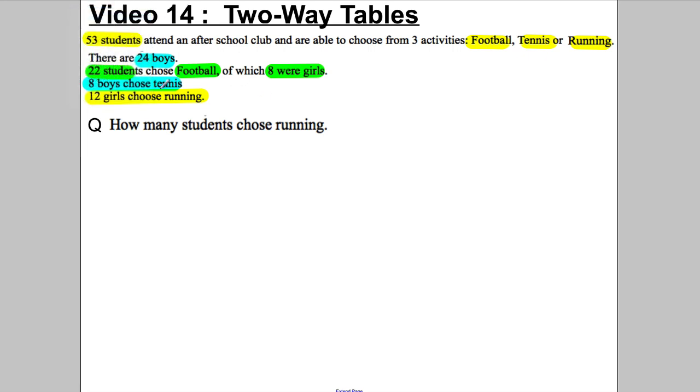The way we set this up is always the same: put your options across one side of a table. So your options are football, tennis and running across one side and put whether they're boys or girls down the side. We have a football column, a tennis column and a running column and always make sure you've got a total column as well. Down the side we're going to have boys, girls, and a total as well.